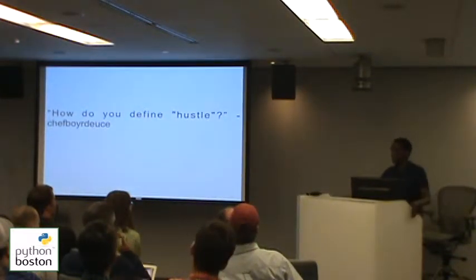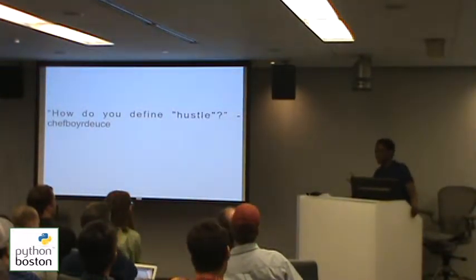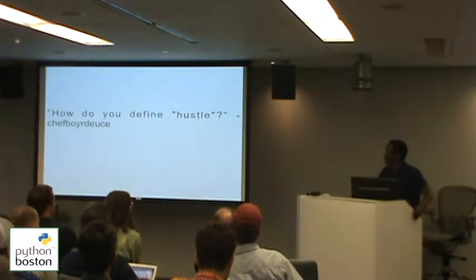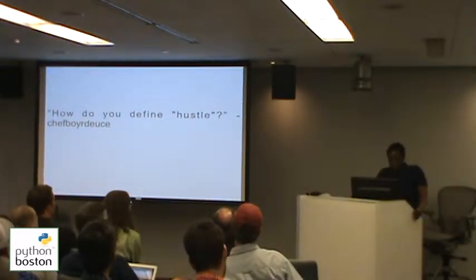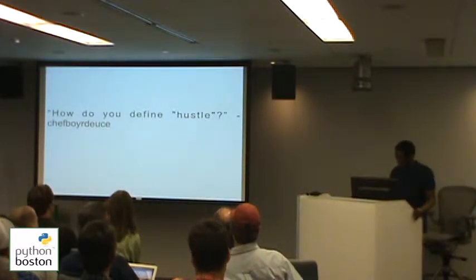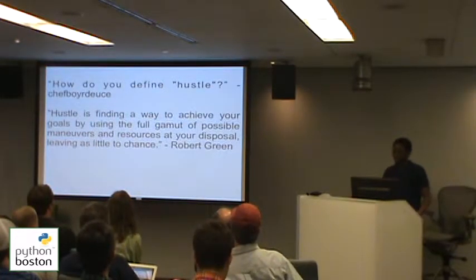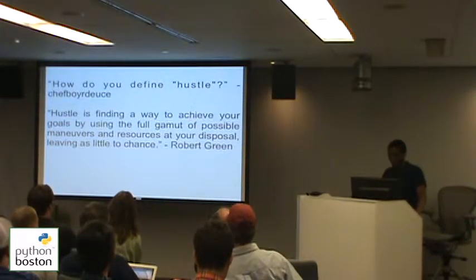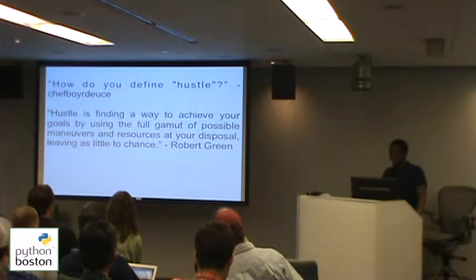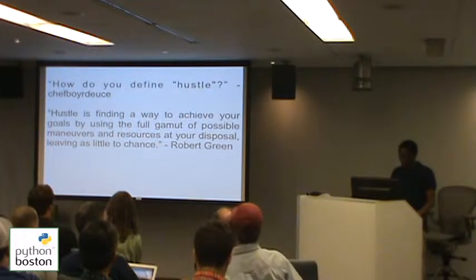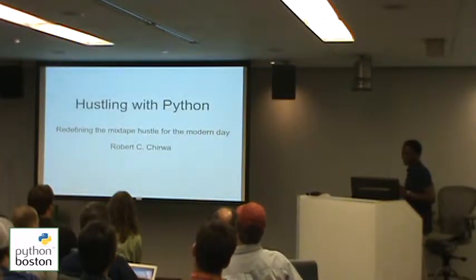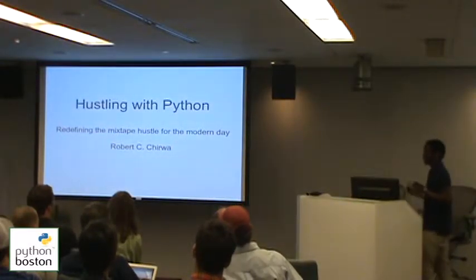On a recent Reddit Ask Me Anything, where someone like Noblethink can go on Reddit and allow the community to ask any questions, the following question was asked of Robert Greene: how do you define hustle? The answer given by Robert Greene was: hustle is finding a way to achieve your goals by using the full gamut of possible maneuvers and resources at your disposal, leaving as little to chance. And as I present to you, hustling with Python — redefining the mixtape hustle for the modern day.